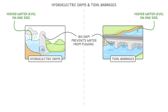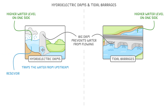In a normal hydroelectric dam, we're just trapping the water that's come from upstream, and preventing it from continuing its journey towards the ocean. If we do this for long enough, we end up accumulating a huge amount of water, which we call a reservoir, which basically looks like a big lake.